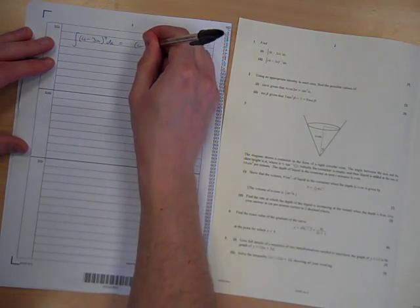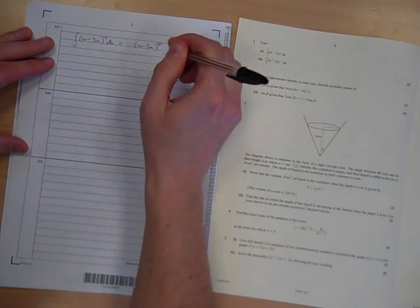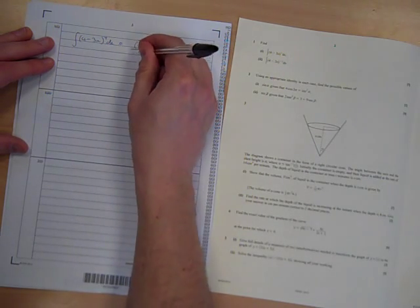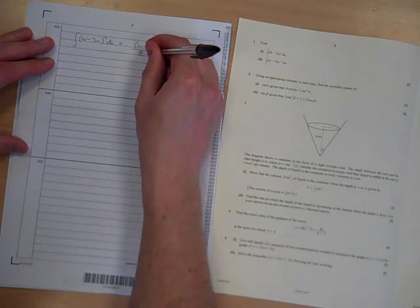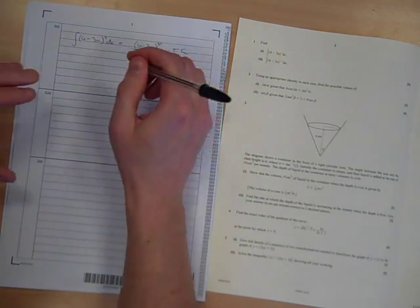So we're going to add 1 to the power, 4 minus 3x to the 8, over the 8, and we're also going to divide by that minus 3 in there, plus c.